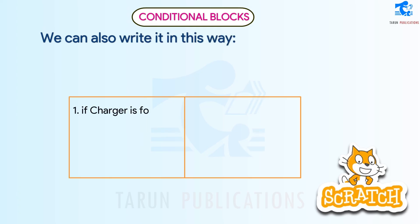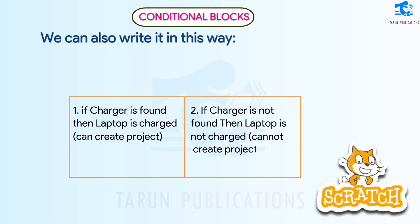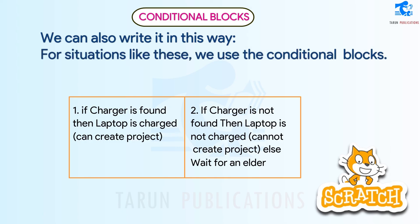We can write it this way: 1. If charger is found, then laptop is charged and you can create the project. 2. If charger is not found, then laptop is not charged and you cannot create the project — else wait for an elder. For situations like these, we use the conditional blocks.